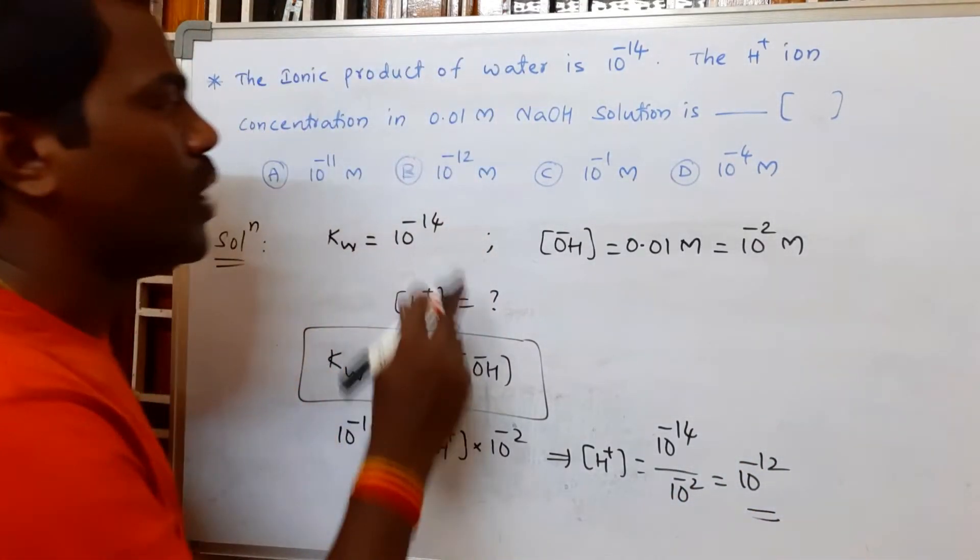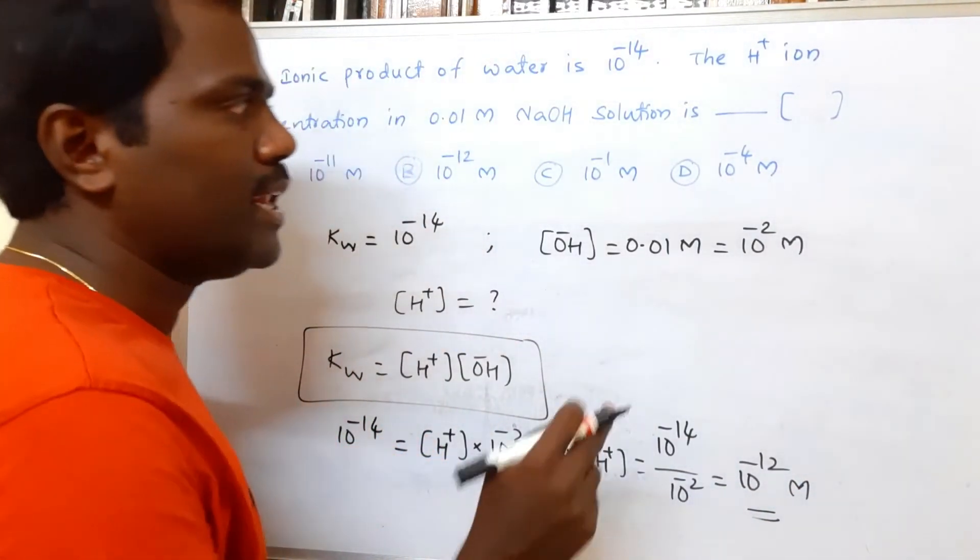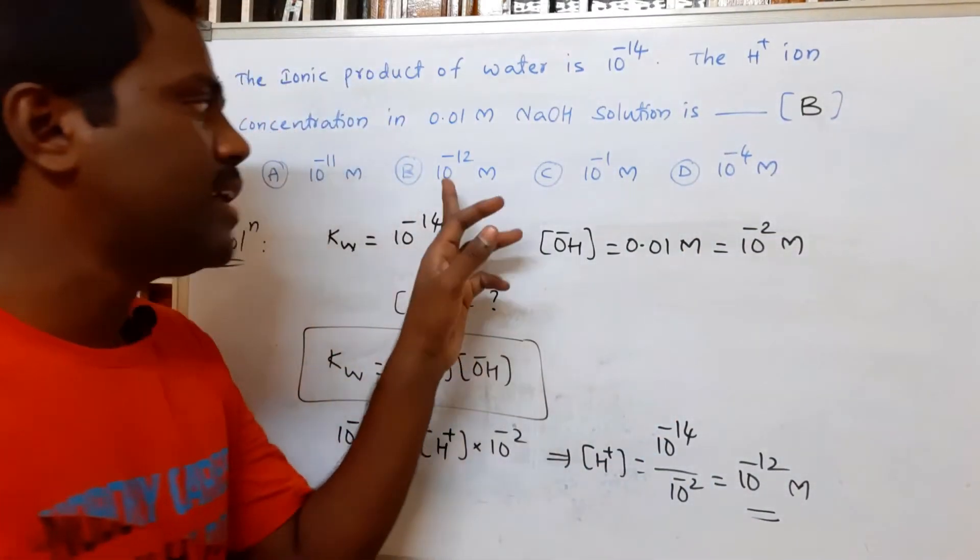So this is the value: 10^-12 molar. Molar means mol per liter. Then which option is correct? Option B is correct for this question.